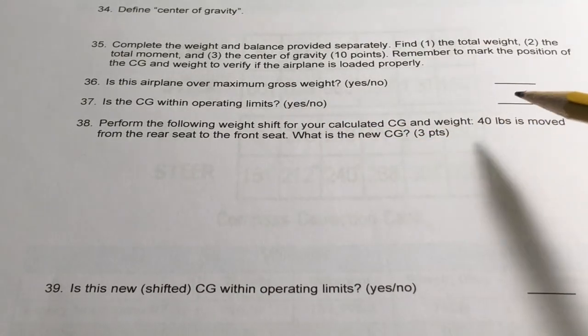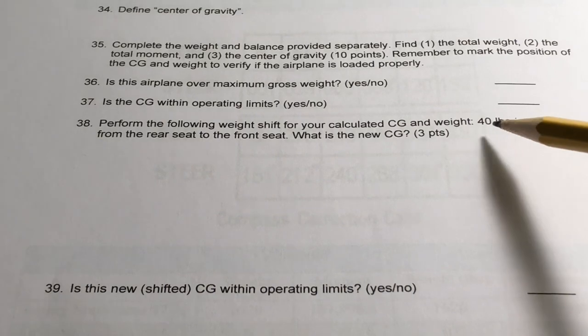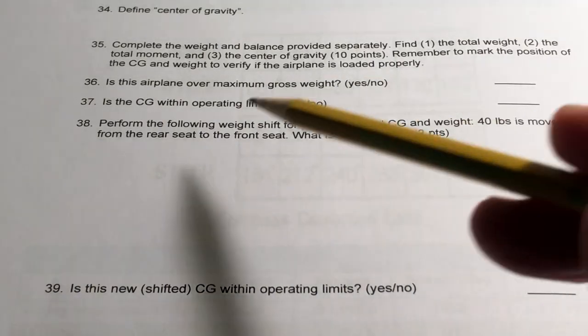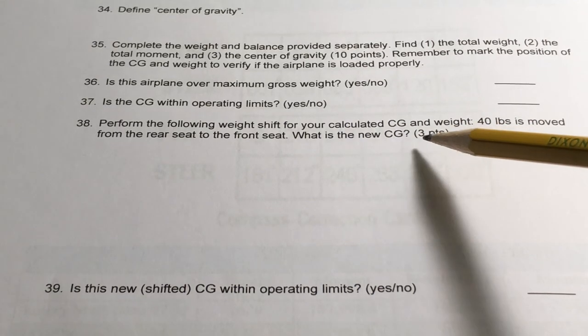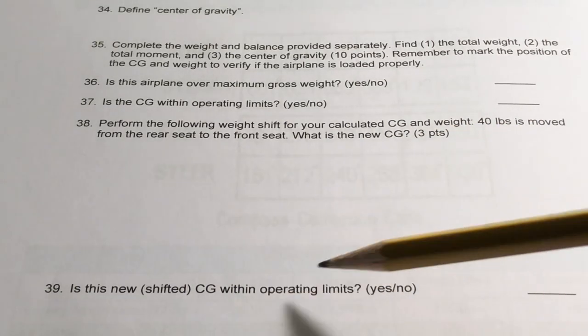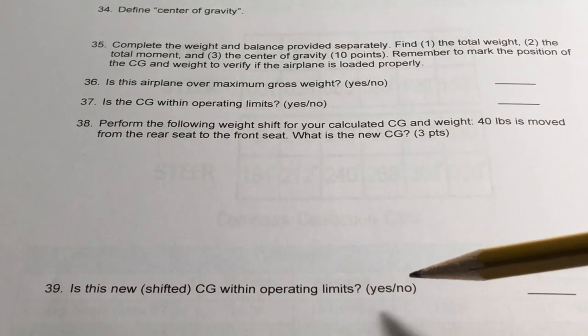And 38 is, perform the following weight shift calculation. We're going to move 40 pounds from the rear seat to the front seat and determine what the new CG is and then determine whether that new CG is within operating limits.